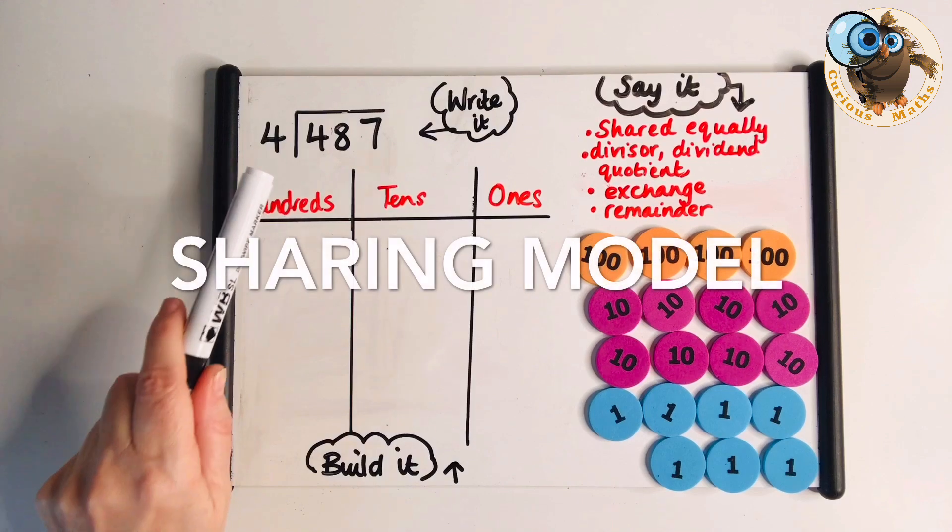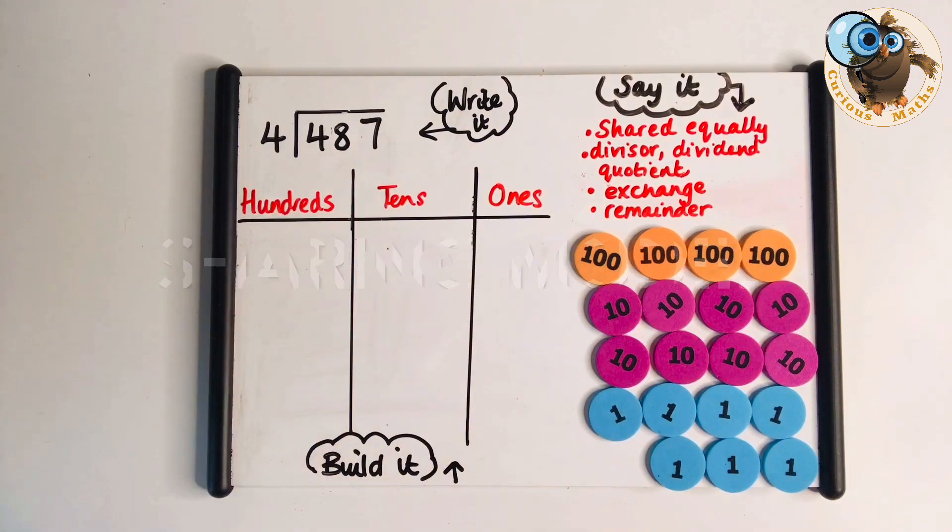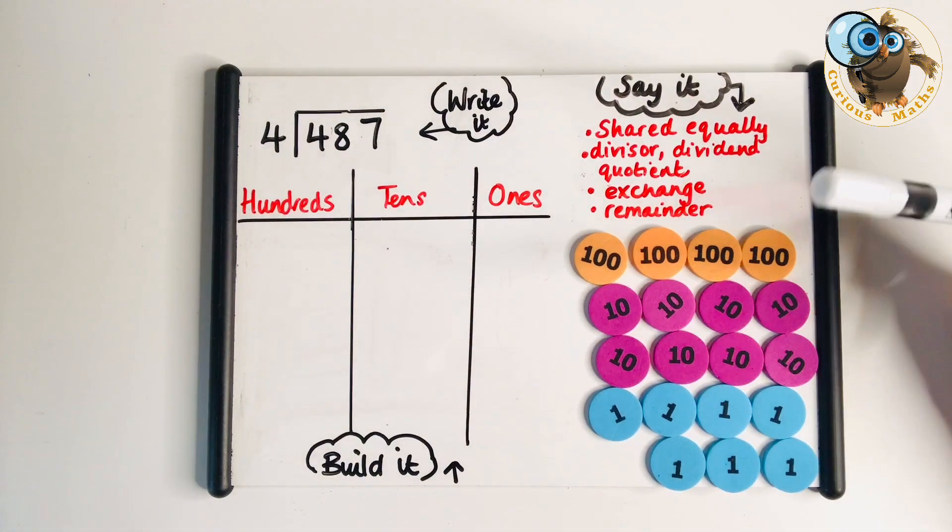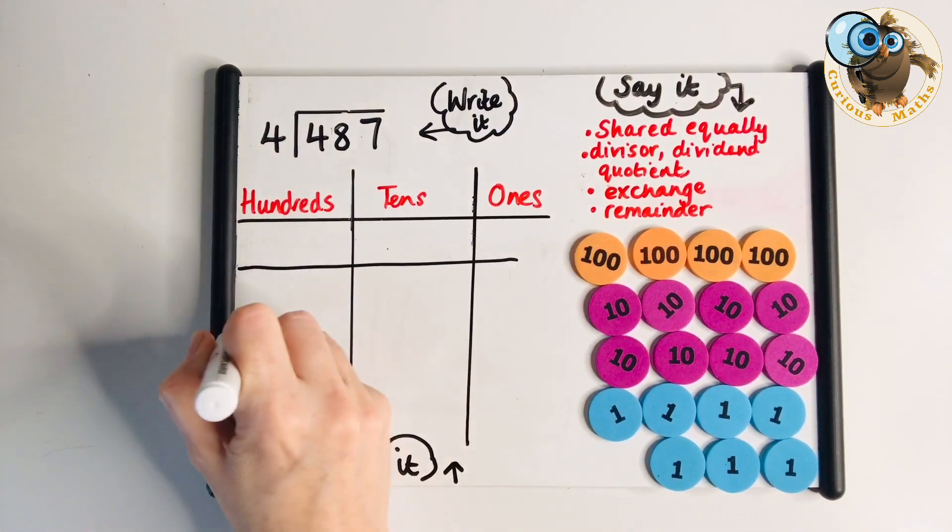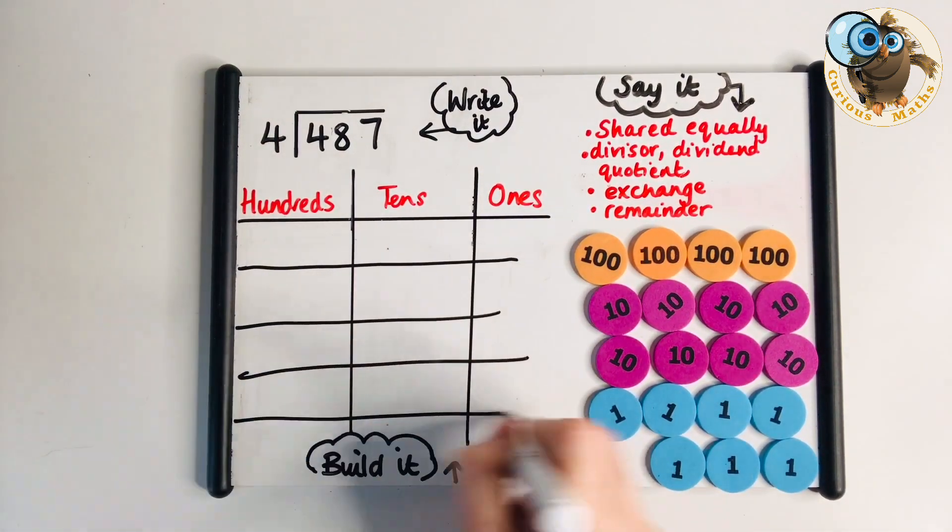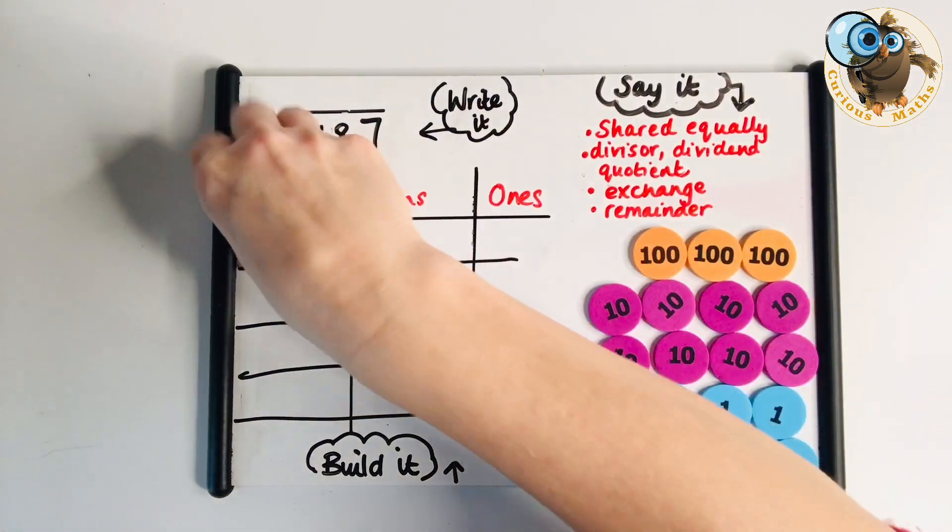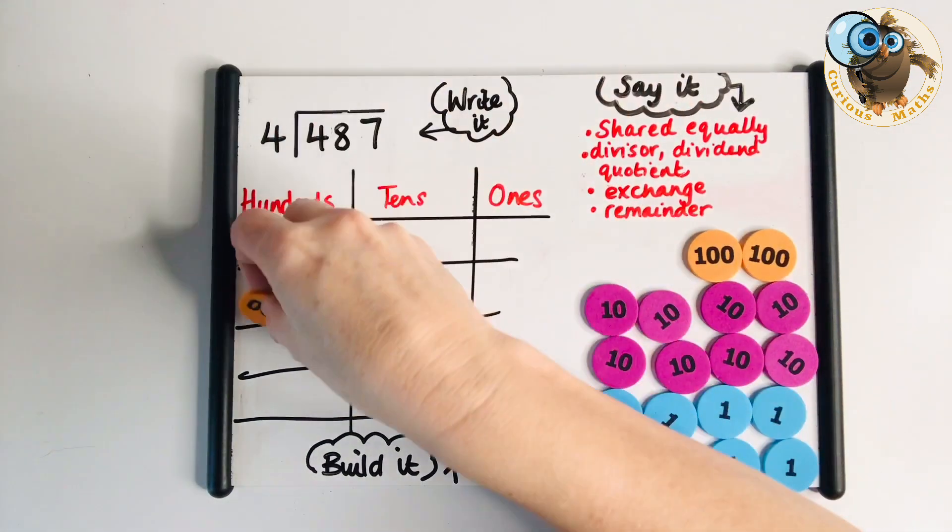Getting harder again, we've got a three digit number. This time we're going to have a remainder at the end on the ones column. This kind of question doesn't come in until Year 5 when they use short division with remainders. I would still advocate doing the build it, draw it, write it, say it approach even though the numbers are getting bigger.